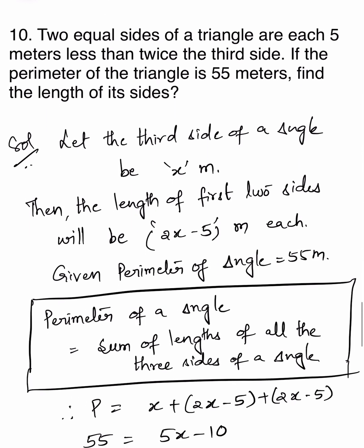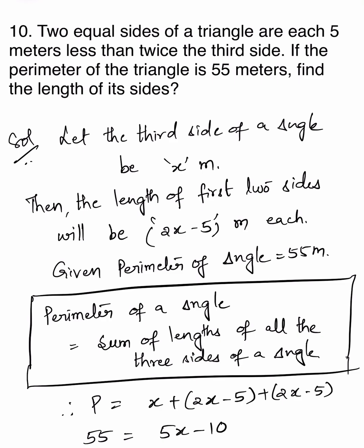Two equal sides of a triangle are each 5 meters less than twice the third side. If the perimeter of the triangle is 55 meters, find the lengths of its sides. Let the third side of the triangle be x meters. The length of each of the other two sides will be 5 meters less than twice the third side — that is, 2x minus 5 each. Given perimeter is 55 meters. The perimeter of a triangle is the sum of the lengths of all three sides.